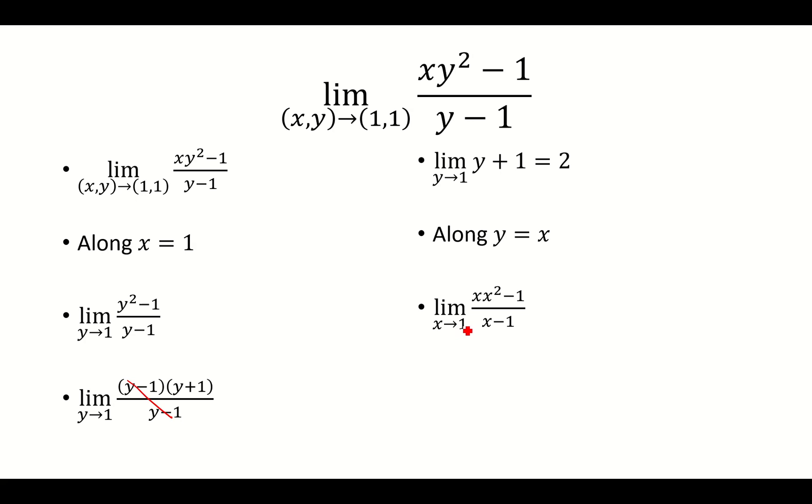And so we have the limit as x approaches 1 of x times x squared minus 1 over x minus 1. And so that gives us x cubed minus 1 over x minus 1.